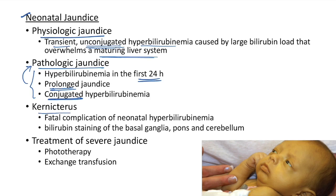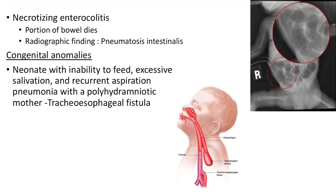Kernicterus is a fatal complication of neonatal hyperbilirubinemia. There is bilirubin staining of basal ganglia, pons, and cerebellum. Treatment options for severe jaundice include phototherapy and exchange transfusion.